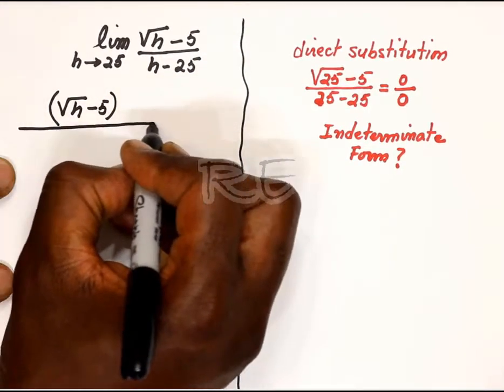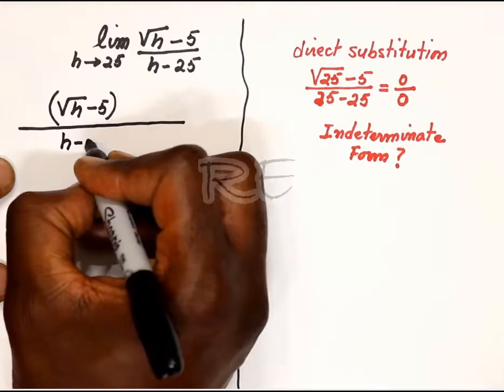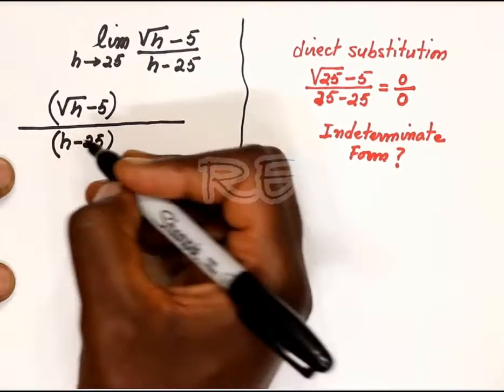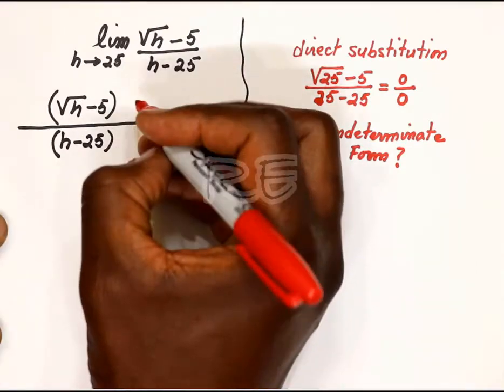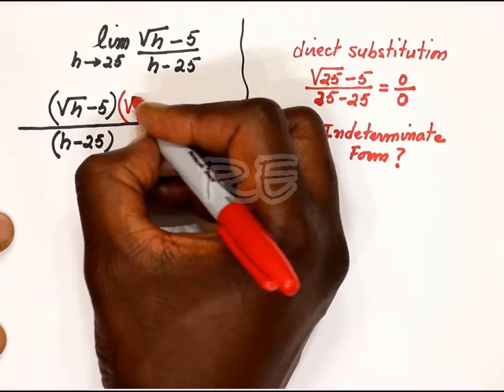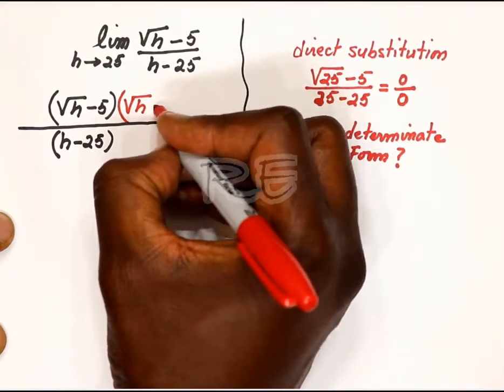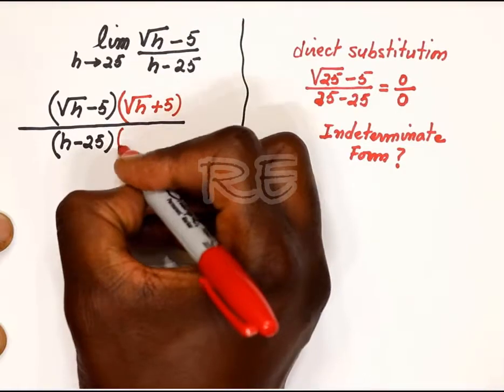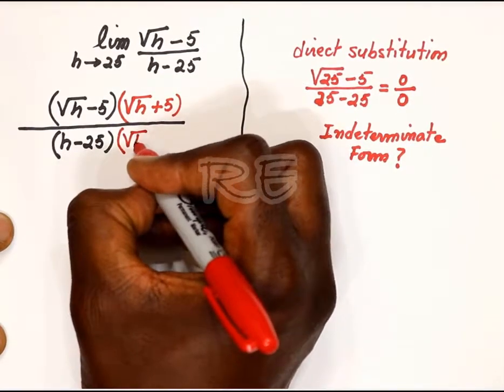Let's write the function: square root of h minus 5 over h minus 25. Parentheses will help us. Now the conjugate of square root of h minus 5 is square root of h plus 5.